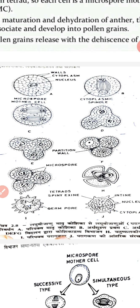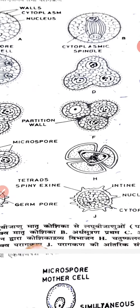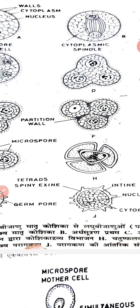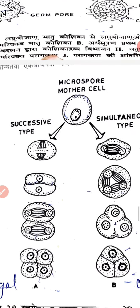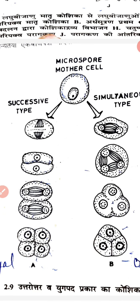If we look at a single spore, a single spore has a pine-like outer layer, and inside it there is an enzyme, cytoplasm, and a nucleus. The movement and formation of the parietal wall occurs in two ways: one is successive and the other is simultaneous.